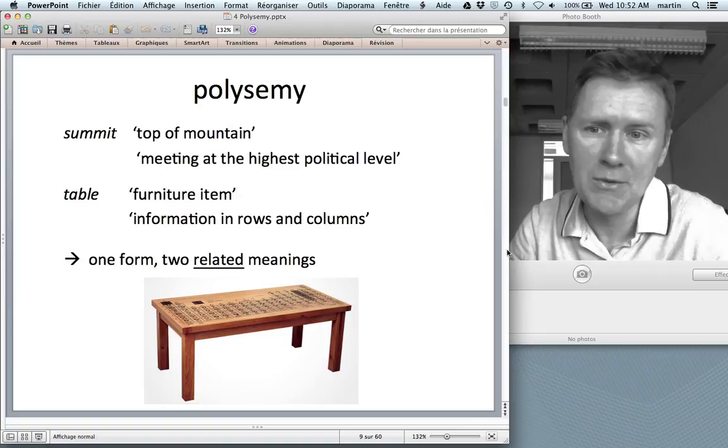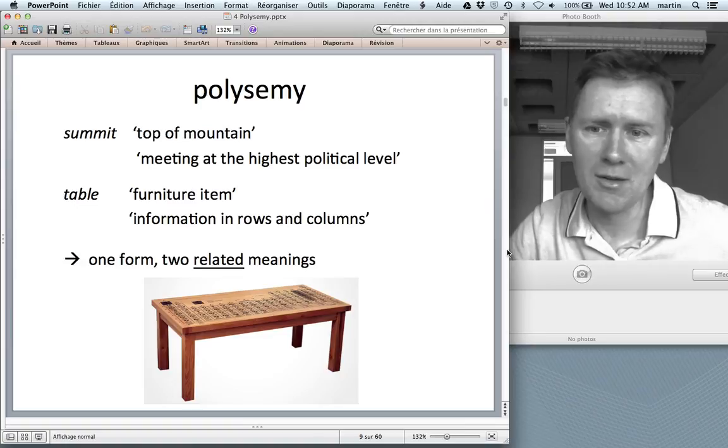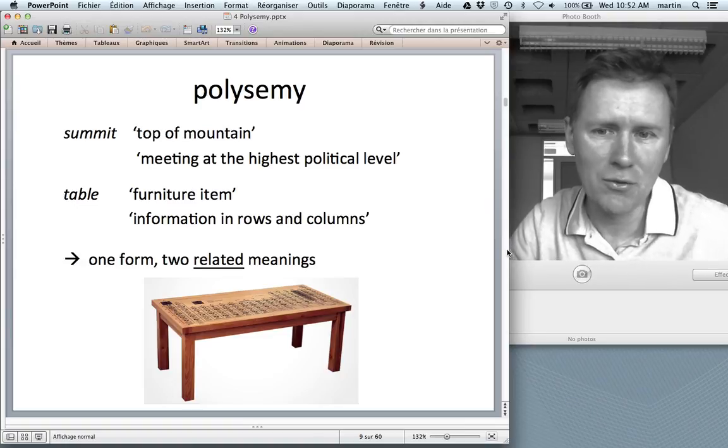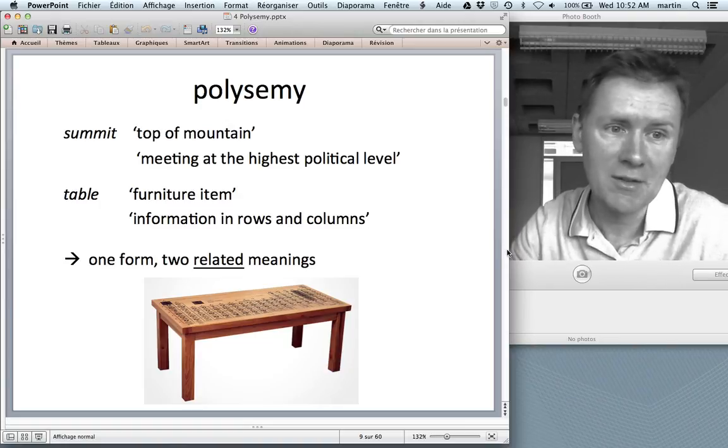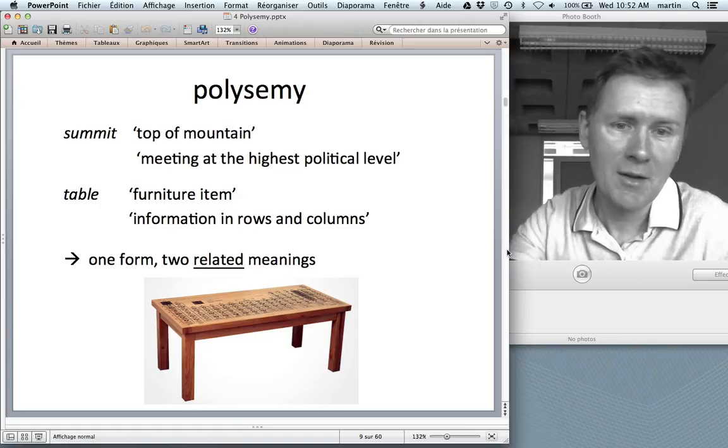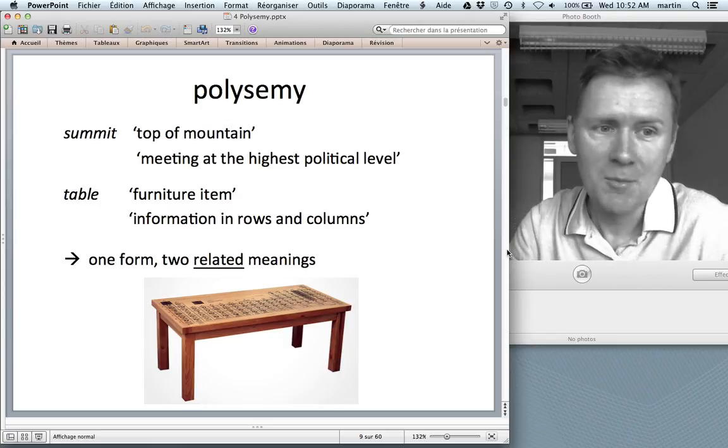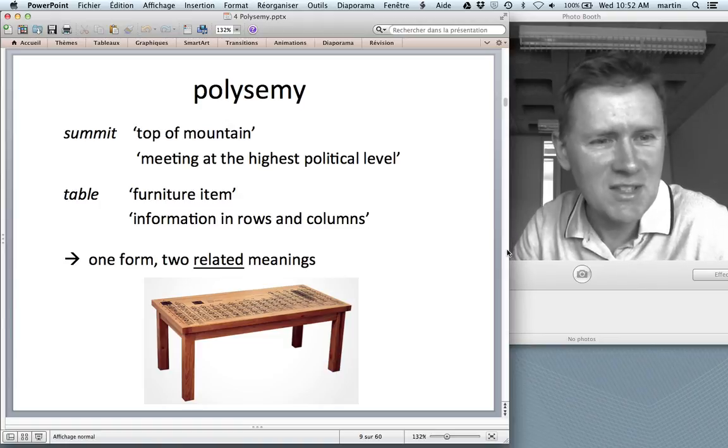So, examples are, for instance, summit, top of a mountain, and meeting at the highest political level; a table, a furniture item, and a presentation of information in a rectangular format of rows and columns. Now, to be sure, these meanings are very different. Top of a mountain and a meeting of guys in suits. Very different. But nonetheless, I'm willing to bet that you're saying, well, I can sort of see the relation.